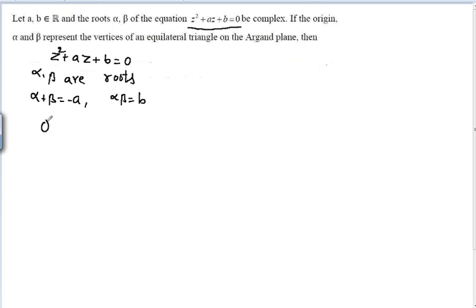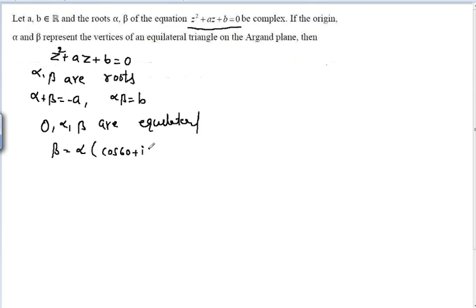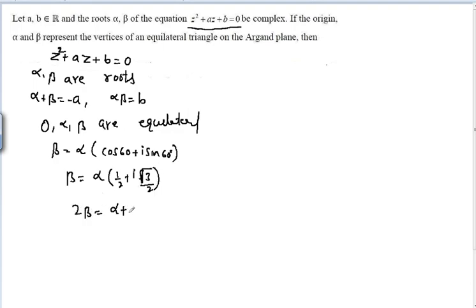Since the origin, alpha, and beta are vertices of an equilateral triangle, beta = alpha · (cos 60° + i sin 60°) = alpha · (1/2 + i√3/2). So 2β = α + αi√3, which gives 2β - α = αi√3.